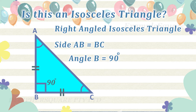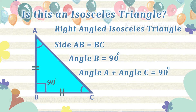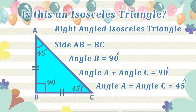In a right angled isosceles triangle, since one angle is 90 degrees, the sum of the other two angles is 90 degrees, as the sum of three interior angles of a triangle is always 180 degrees. Also, in an isosceles triangle, the two angles opposite to the equal sides are equal, and so the other two angles in a right angled isosceles triangle have 45 degrees each.